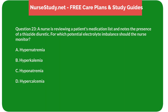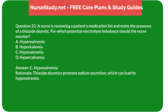Question 23: A nurse is reviewing a patient's medication list and notes the presence of a thiazide diuretic. For which potential electrolyte imbalance should the nurse monitor? A) Hypernatremia, B) Hyperkalemia, C) Hyponatremia, D) Hypercalcemia. Answer: C, Hyponatremia. Rationale: Thiazide diuretics promote sodium excretion, which can lead to hyponatremia.